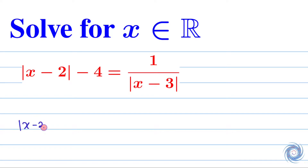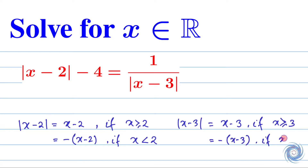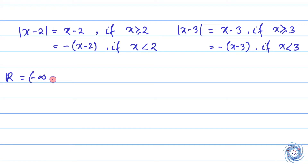Here, |x - 2| equals x - 2 if x ≥ 2, and |x - 2| equals -(x - 2) if x < 2. Similarly, |x - 3| equals x - 3 if x ≥ 3, and |x - 3| equals -(x - 3) if x < 3. Now we will divide the domain ℝ into three sub-intervals and solve the equation for x in each sub-interval.